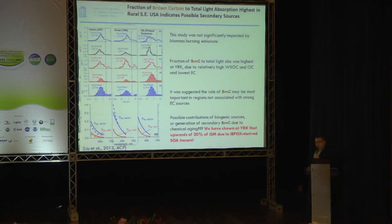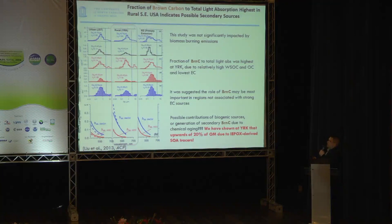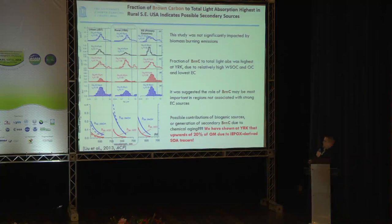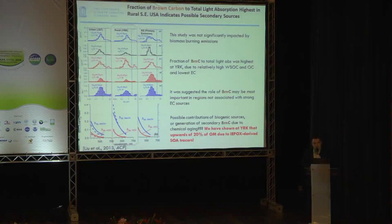I first wanted to start off talking about other types of SOA constituents such as brown carbon that might be forming from this chemistry. This is a figure from Rodney Weber's group showing that in Yorkville, Georgia, where you have very little influence from biomass burning and very little elemental carbon, the total fraction of light absorption can be coming from brown carbon. Interestingly, they showed that if you extract the samples with methanol, you see more brown carbon constituents. Yorkville is a rural site where we've made field measurements and shown that the IAPOX chemistry really dominates there — about 20% of the total OM comes from this chemistry just for the known tracer compounds. When we saw this paper, we really wanted to re-ask the question: can we make brown carbon through the IAPOX particle phase chemistry?